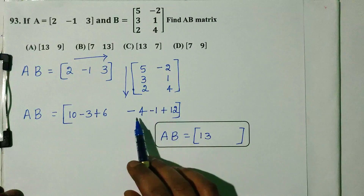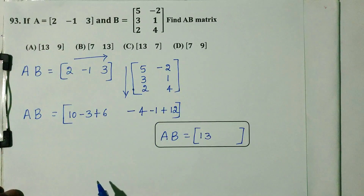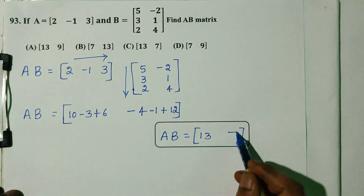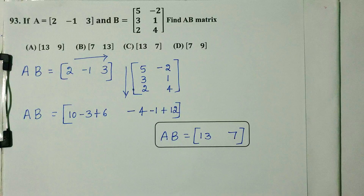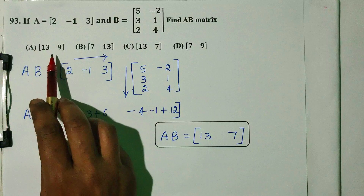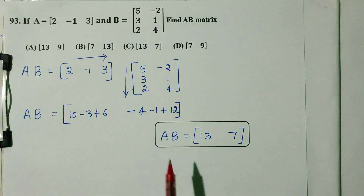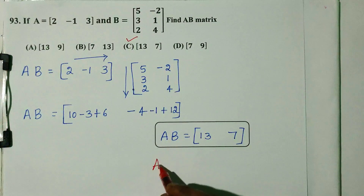Simplifying: 12 - 4 - 1 gives minus 5, and further terms give minus 7. So the final answer for A×B is computed. Option C is the right answer.